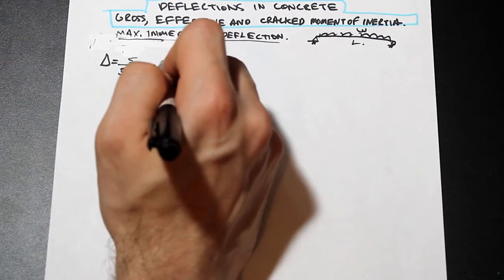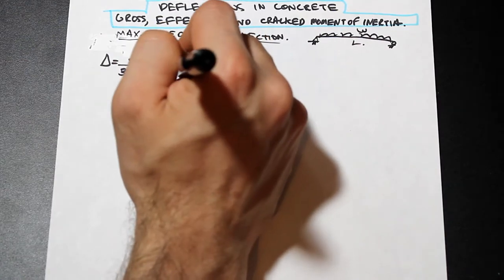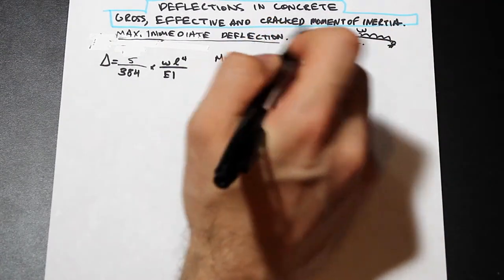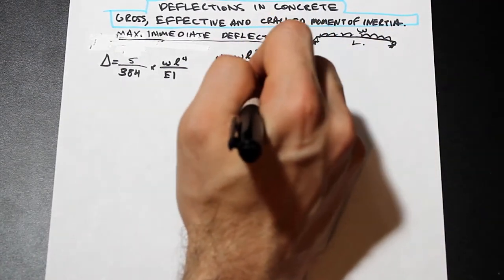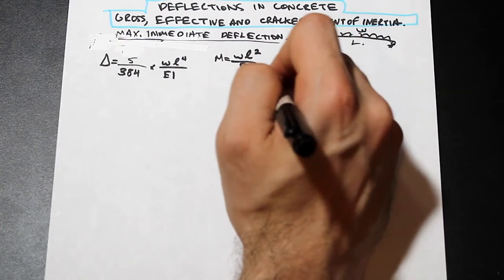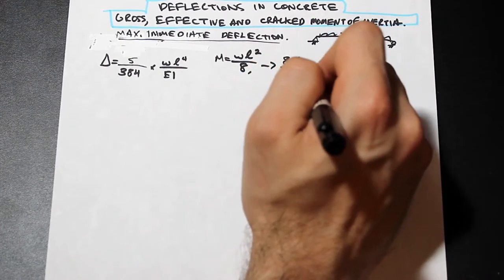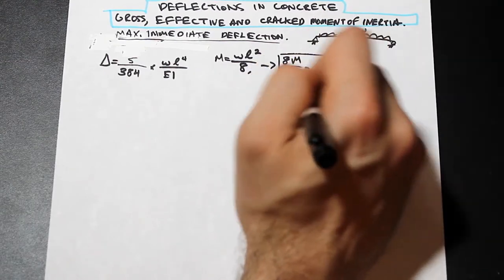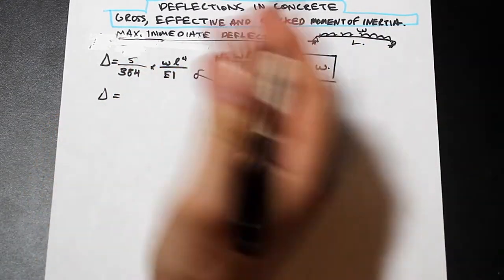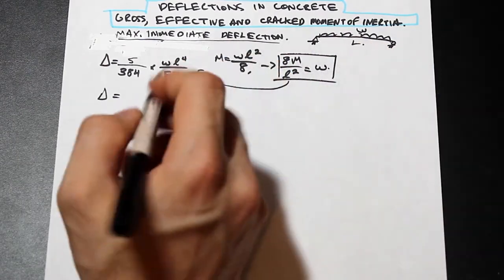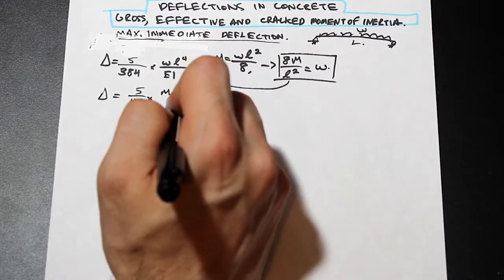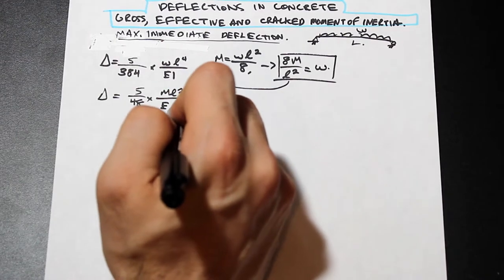The bending moment at mid-span is wL²/8. We can rearrange and solve for w — that gives us 8M/L² equals w. Substituting back in, our formula for the immediate deflection of a simply supported concrete beam subjected to a uniformly distributed load becomes 5/48 times ML²/EI.